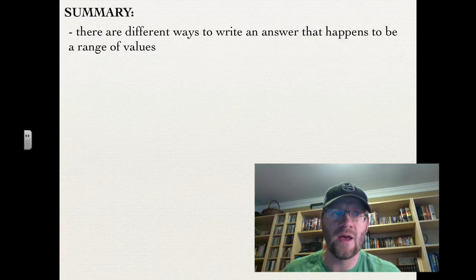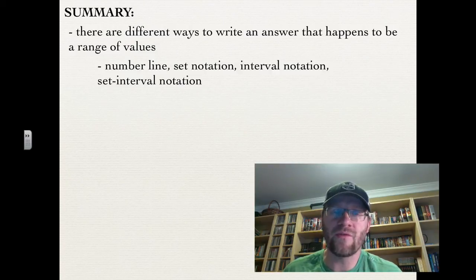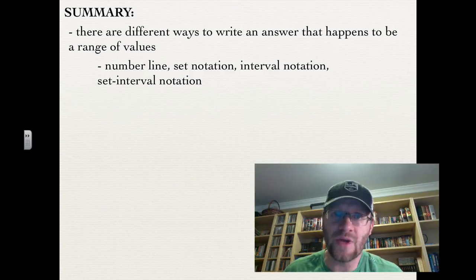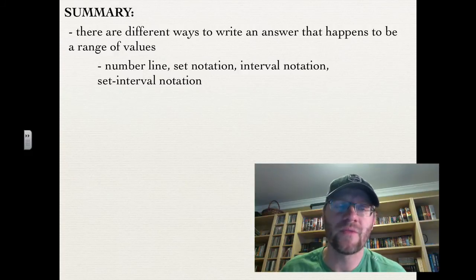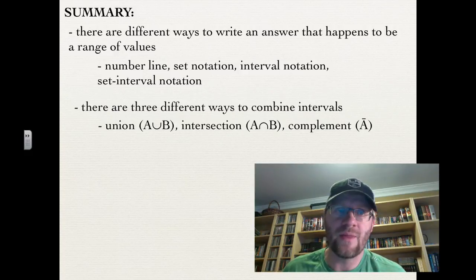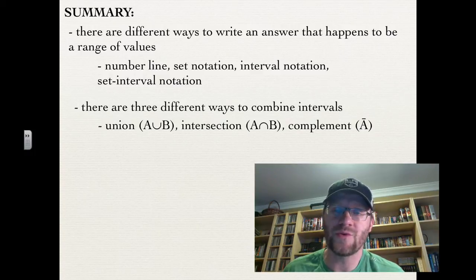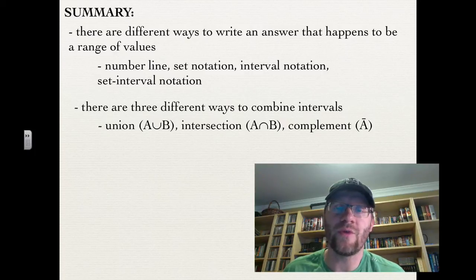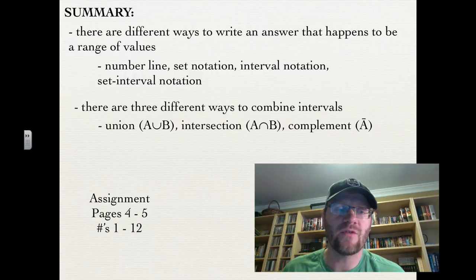In summary, there are different ways to write an answer that is a range of values: a number line, set notation, interval notation, or set and interval notation together — the question will usually tell you what's needed. There are three ways to combine intervals: union (A or B), intersection (A and B), and complement (A bar). Your assignment is on pages 4 to 5, questions 1 to 12. Good luck and we'll see you in class.